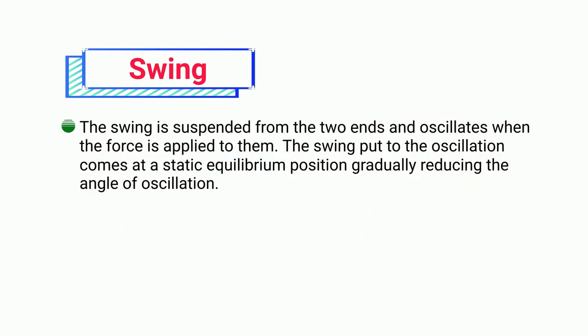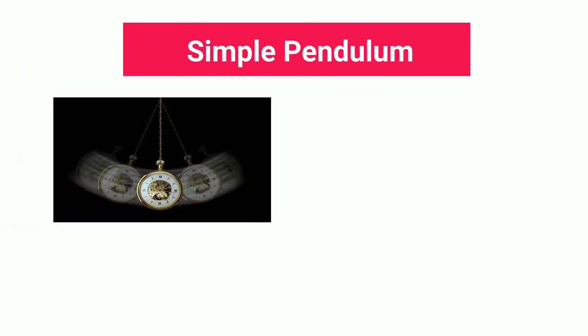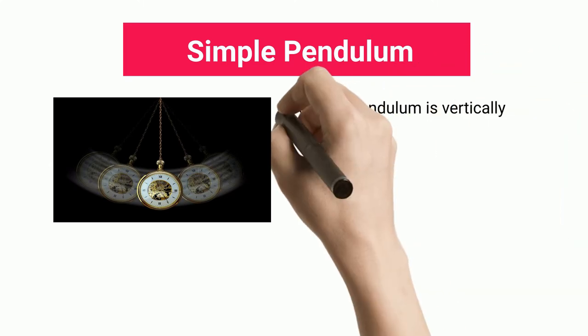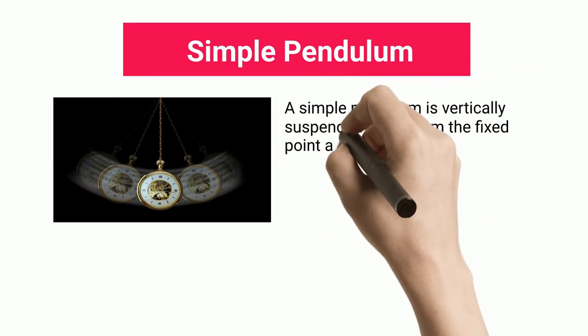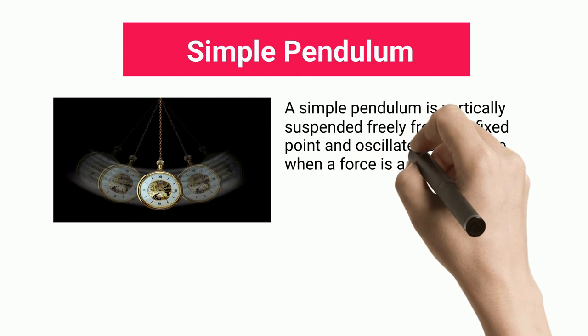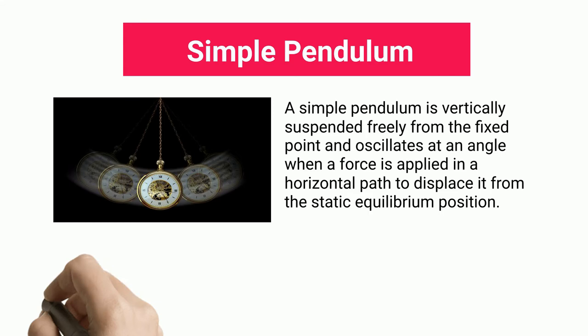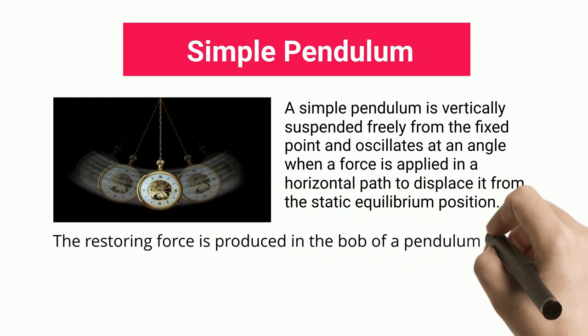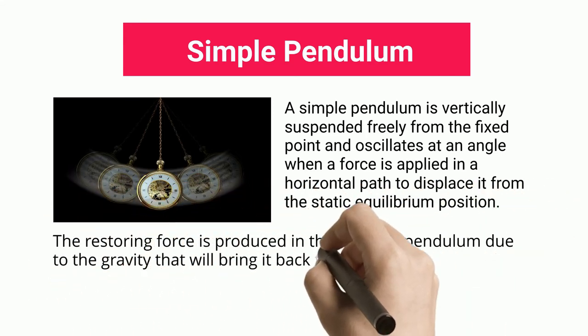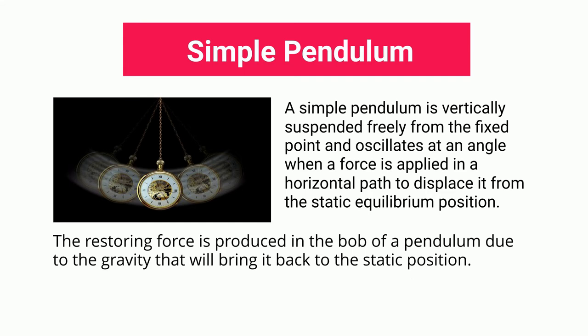Simple Pendulum: A simple pendulum is vertically suspended freely from a fixed point and oscillates at an angle when a force is applied in a horizontal path to displace it from the static equilibrium position. The restoring force is produced in the bob due to gravity that brings it back to the static position.